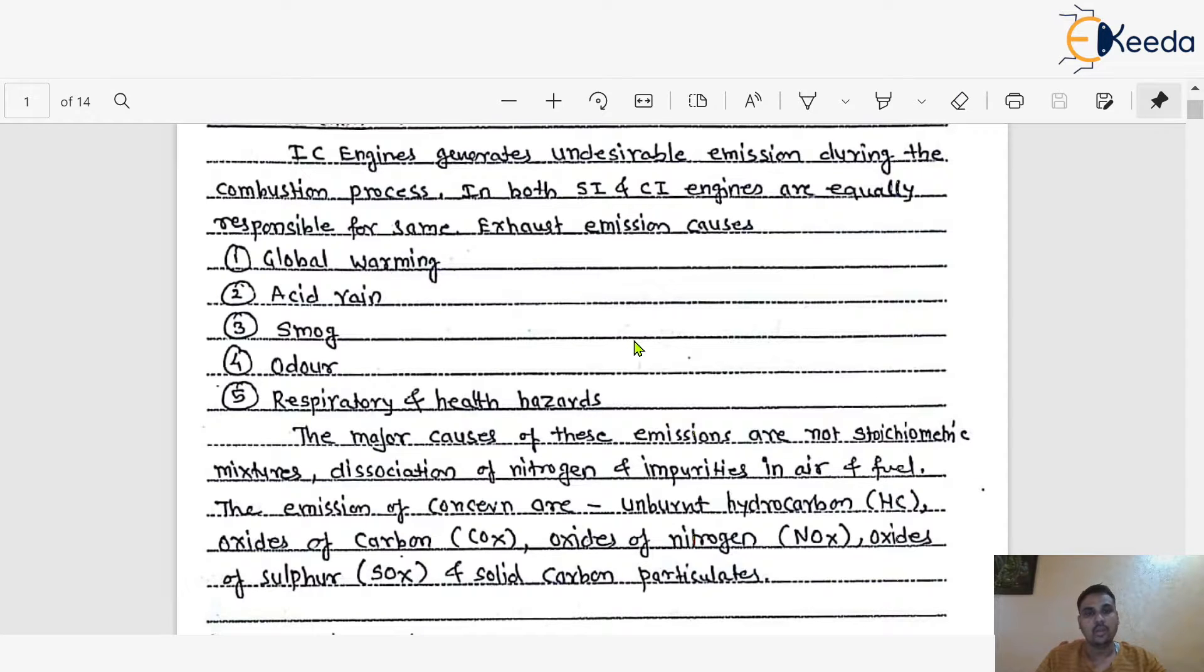As we already discussed about the various things related to IC engines, what is the meaning of internal combustion engines, we know there are different processes: suction, compression, expansion and exhaust. Ultimately, engine is a device which is used to convert the chemical energy of fuel into heat energy.